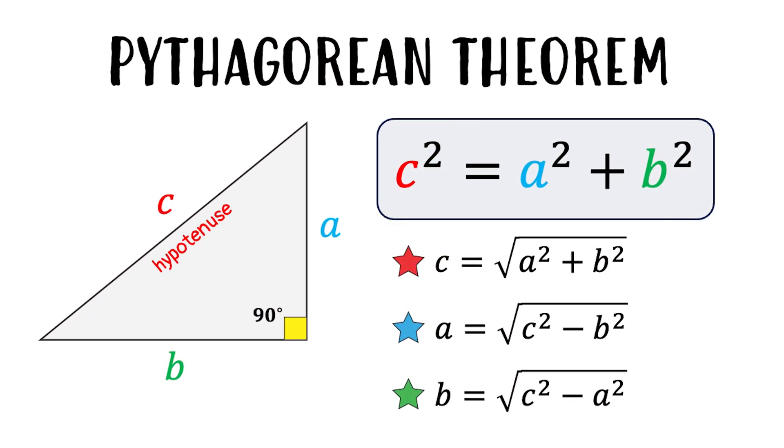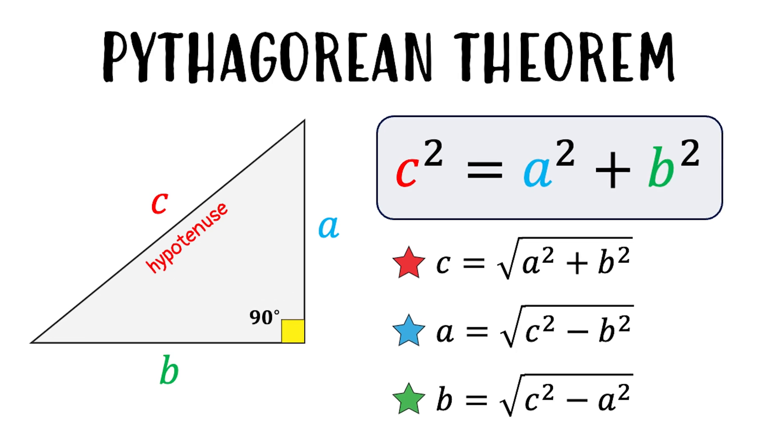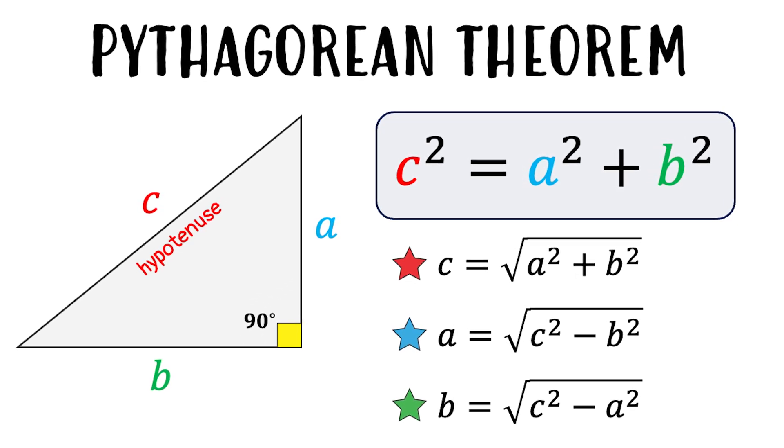The formula shows the relationship between the side lengths of a right triangle. A and B are side legs that form the right angle and C is the hypotenuse, which is the side leg across from the right angle.